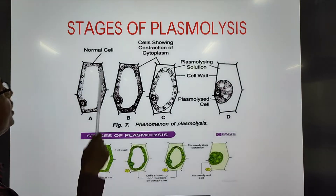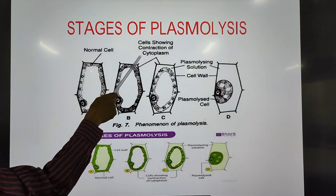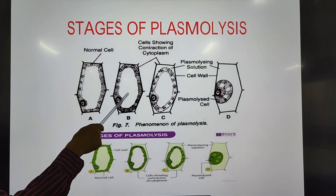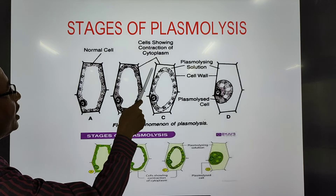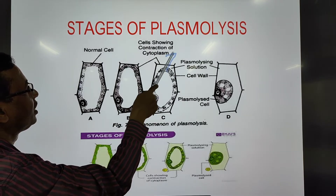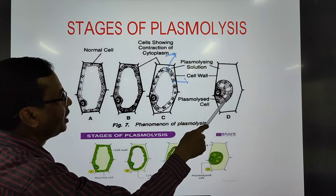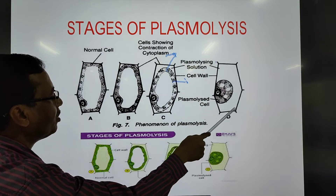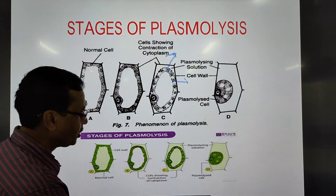Let us see the stages of plasmolysis in a figure. We start with a normal cell having cytoplasm and nucleus properly defined. When placed in a hypertonic solution, exosmosis slowly takes place — water moves out of the cell — and finally shrinkage of the protoplasm bounded by the cell membrane occurs, while the cell wall remains in place.